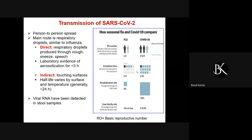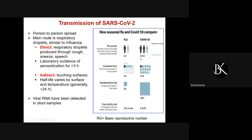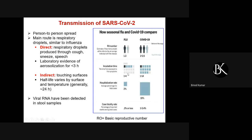The R0 number is the basic reproductive number. For flu it is 1.3 — meaning one infected person can transmit the virus to 1.3 persons. For COVID-19, one infected person can transmit to 2 to 2.5 persons — higher than flu. The incubation time for flu is one to four days with a viral load decline around day five or six, but for COVID-19 the incubation time is prolonged — one to fourteen days — which is why a suspected infected person must quarantine for more than two weeks.